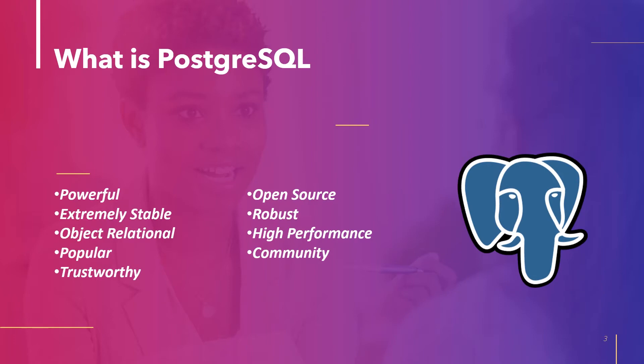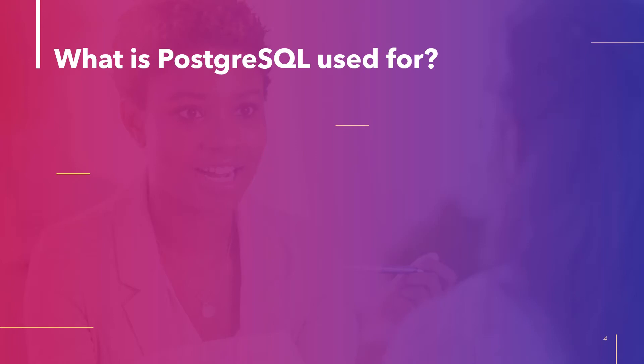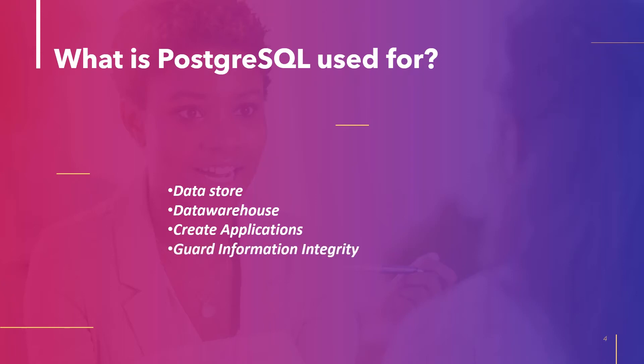Now let's move to the next topic: what is PostgreSQL used for? PostgreSQL is used as the primary data store or data warehouse for many websites, mobile applications, geospatial, and analytics applications. It facilitates developers to create applications, administrators to guard information integrity, and build fault-tolerant environments.